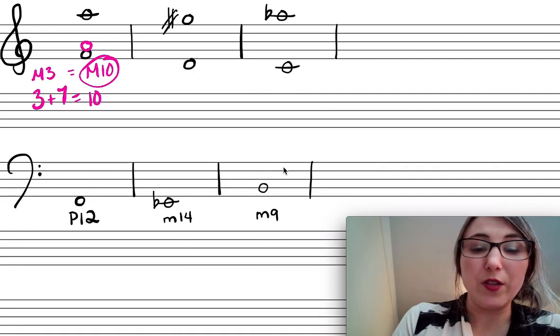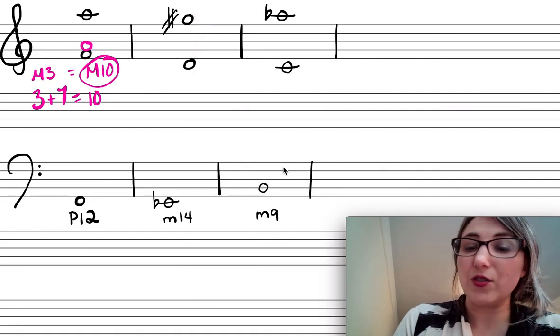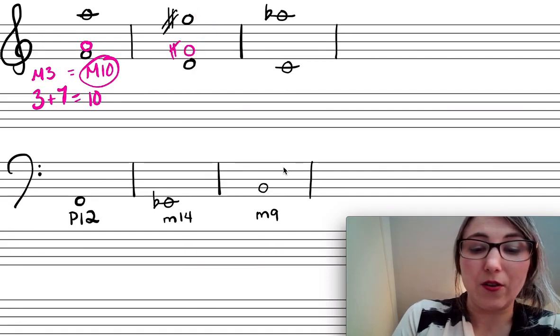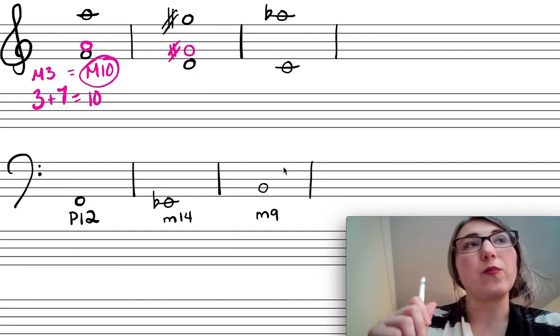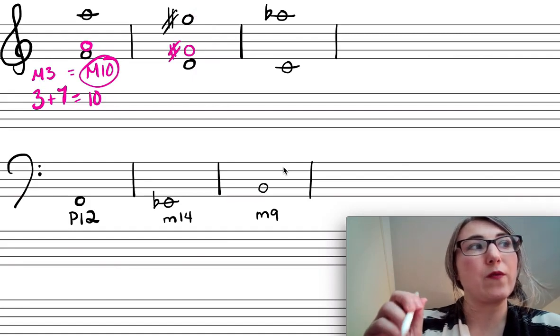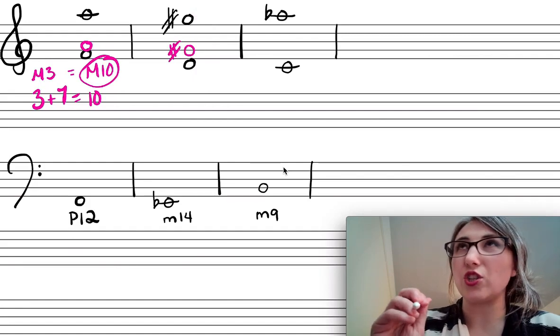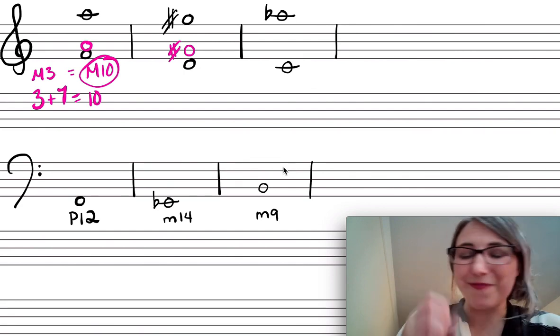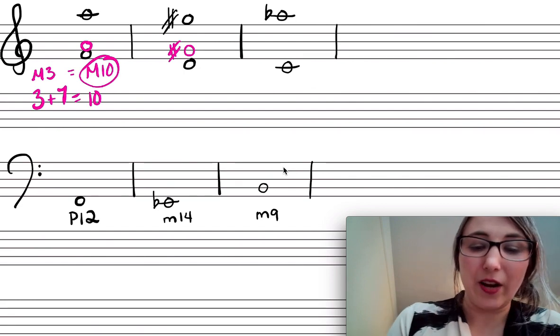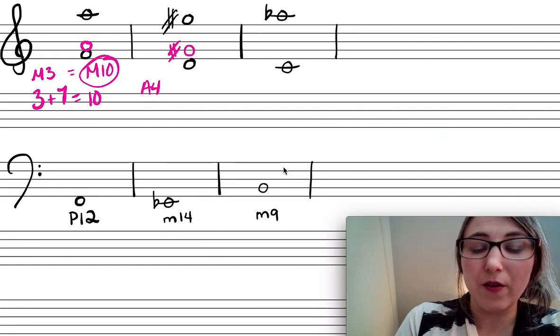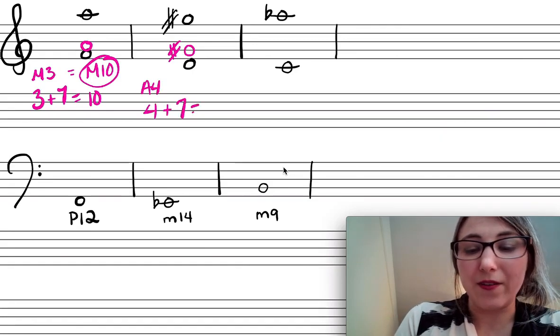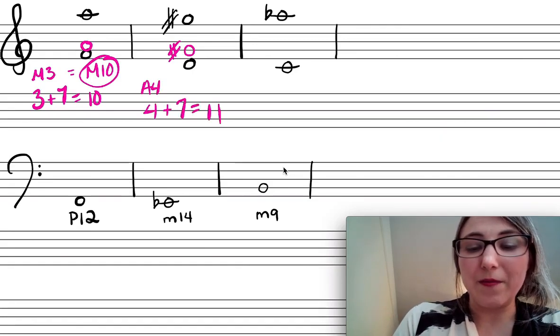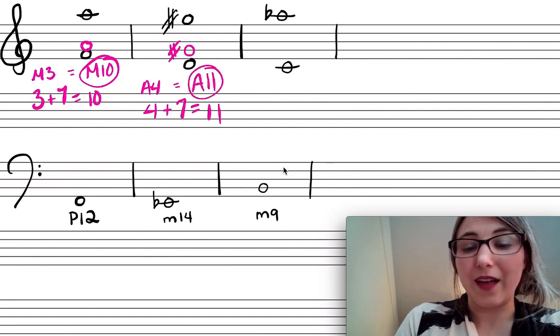Okay let's try another one. So I'm going to move this G sharp down an octave so it would be right here. So D up to G sharp, well D to G is a perfect 4th, right? So D to G sharp would be an augmented 4th. Yes. Okay. So augmented 4th. So the compound version of that would be 4 plus 7 equals 11. So that means that this is an augmented 11th.